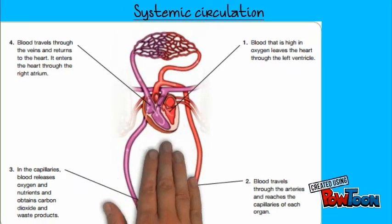Systematic circulation. Step number one: blood that is high in oxygen leaves the heart through the left ventricle. Number two: blood travels through the arteries and reaches the capillaries of each organ. Number three: in the capillaries, blood releases oxygen and nutrients and obtains carbon dioxide and waste. Number four: blood travels through the veins and returns to the heart.